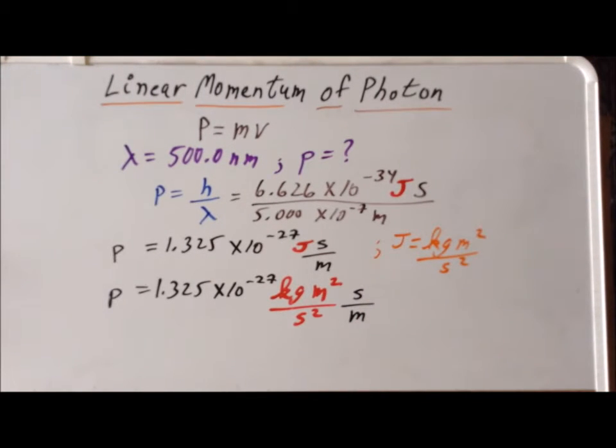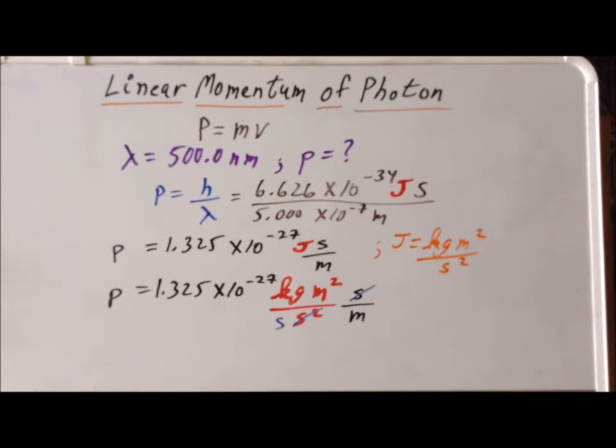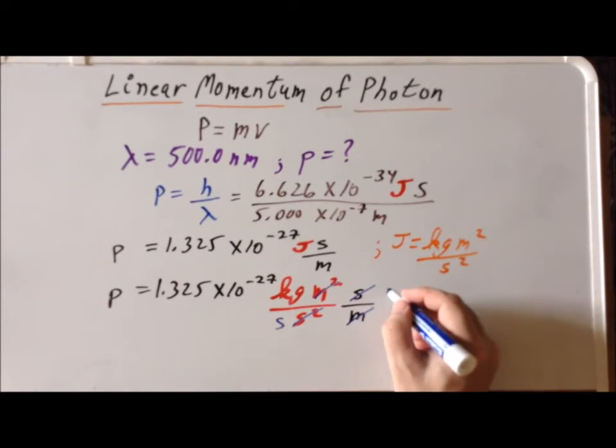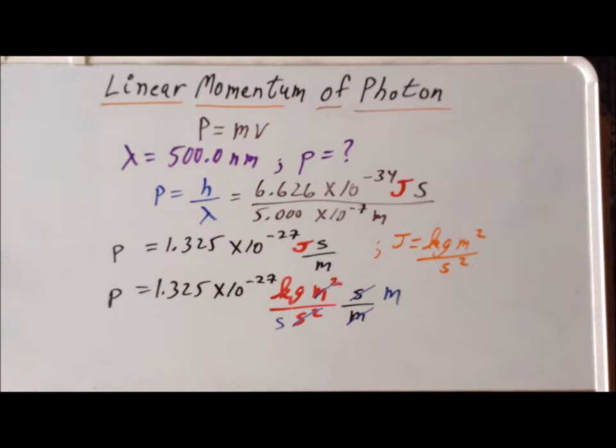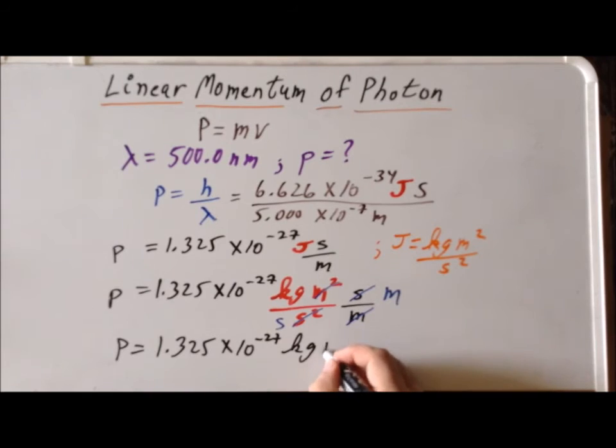Well, we can simplify, since we notice that seconds will cancel with seconds, and I'm left with just seconds in the denominator. Meters and meters squared will cancel, so I can get rid of one meter there, one meter there, and we're left with units of meters in the numerator. And I have my final version of the momentum with the proper units. So, I see that for this particular photon, with a wavelength of 500 nanometers, the momentum of a single photon, one single particle of that light, is going to be 1.325 times 10 to the minus 27 kilogram meters per second. And these are the appropriate units for momentum.